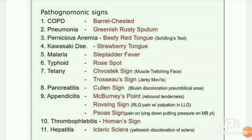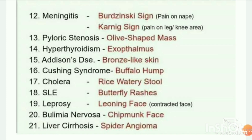Thrombophlebitis — Homan's sign. Hepatitis — icteric sclera: yellowish discoloration of the sclera. Next disease: meningitis — Brudzinski sign: pain on the nape. Kernig sign: pain on the leg and knee area.